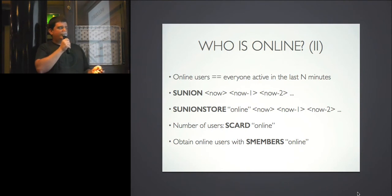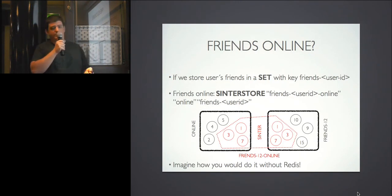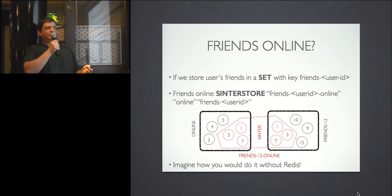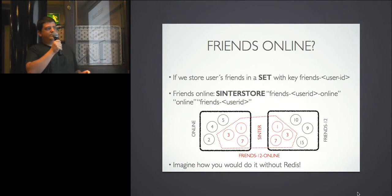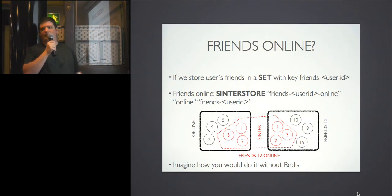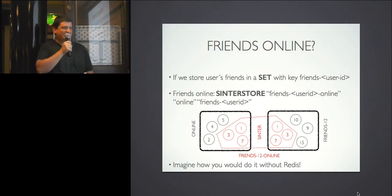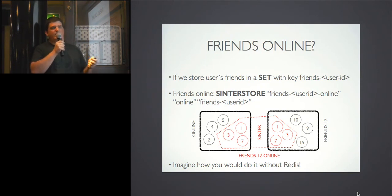You can also get the list with SMEMBERS to show who is online. Related to that: 'who among my friends is connected' — if you create sets with key friends:{user_id} containing friend IDs, then do a SINTER between the online set and the friends set, you get which of your friends are online. Think about how painful that would be with MySQL. With Redis it's just a couple of operations. These intersection operations are O(N*M) complexity, but much faster than any other database.